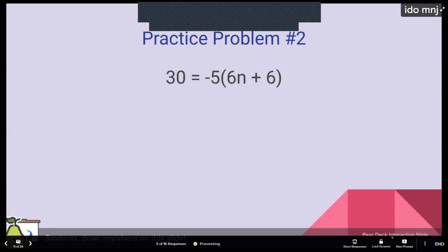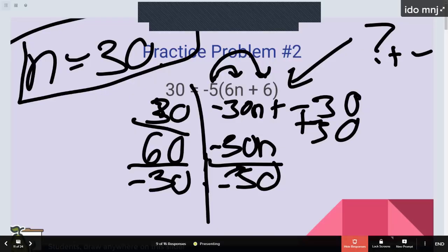All right, so taking a look. So, n does not equal 30. So, this person multiplied the negative 5 through to the 6n and the 6. Got negative 30n. Beautiful. Plus negative 30. Beautiful. And then they added 30. Perfect. So, they got 60. Then they divided by negative 30 and got 30. So, this is the step where this person struggled. So, where 60 divided by negative 30 is not 30. You subtracted. You ended up subtracting instead. So, it should have been negative 2.